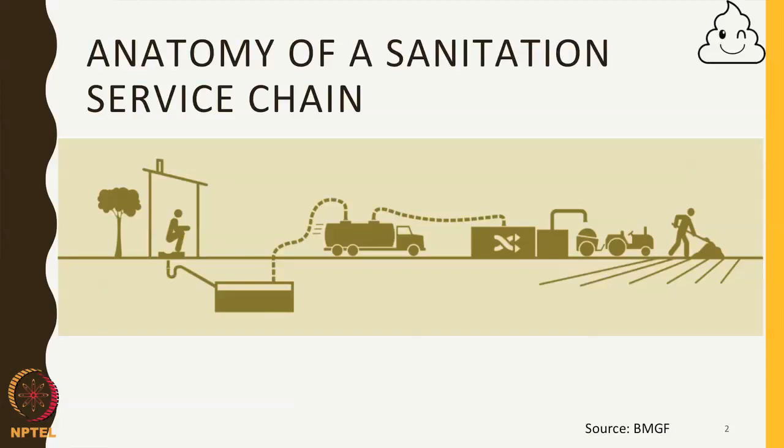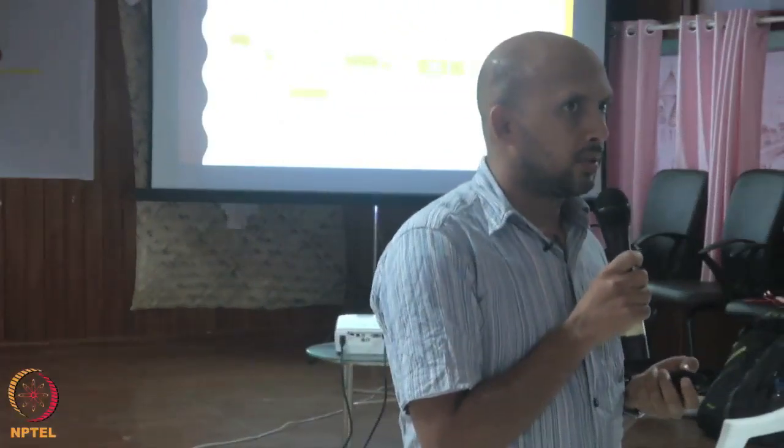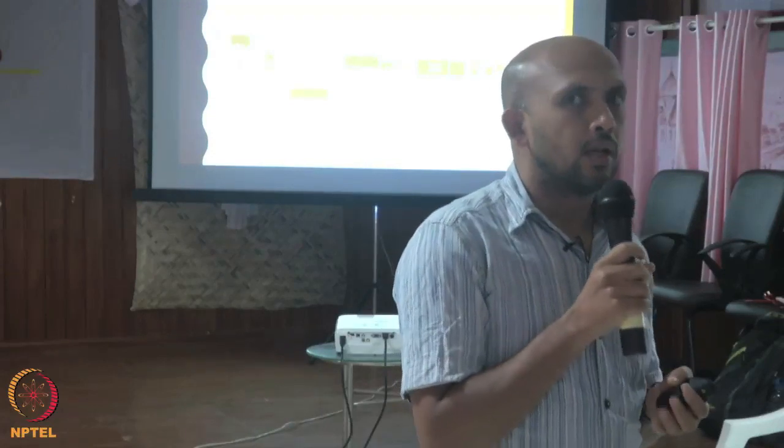That is the service chain. As you can see, there are no sewer lines — there is no sewage. It is called an on-site sanitation system. What do you mean by an on-site sanitation system? The waste is stored on the site itself, not moving very far away. What is the other system? Offsite — and the only offsite system we know is a sewage system.